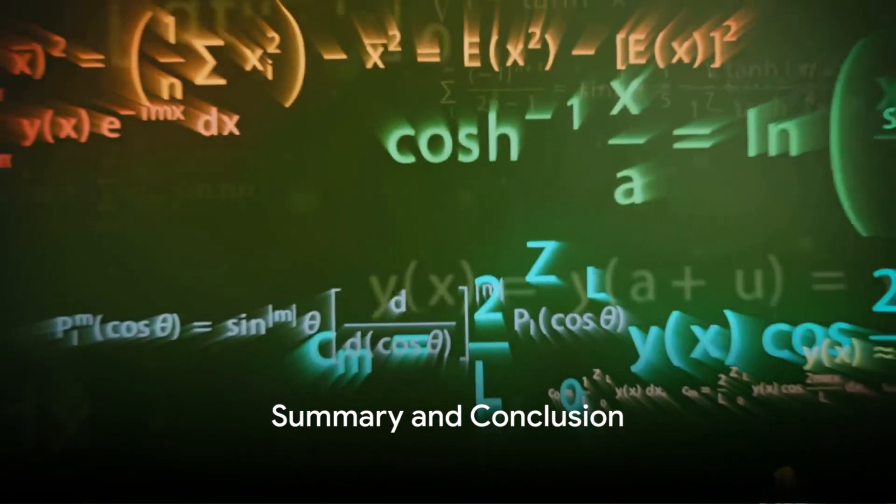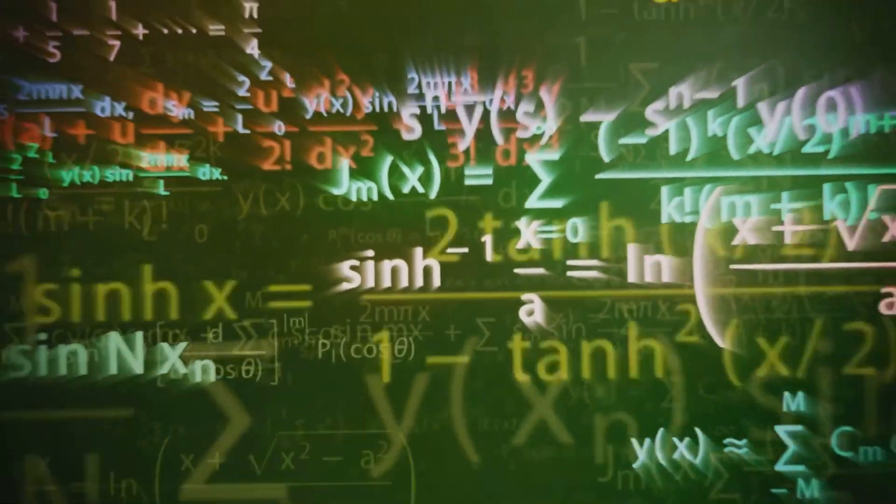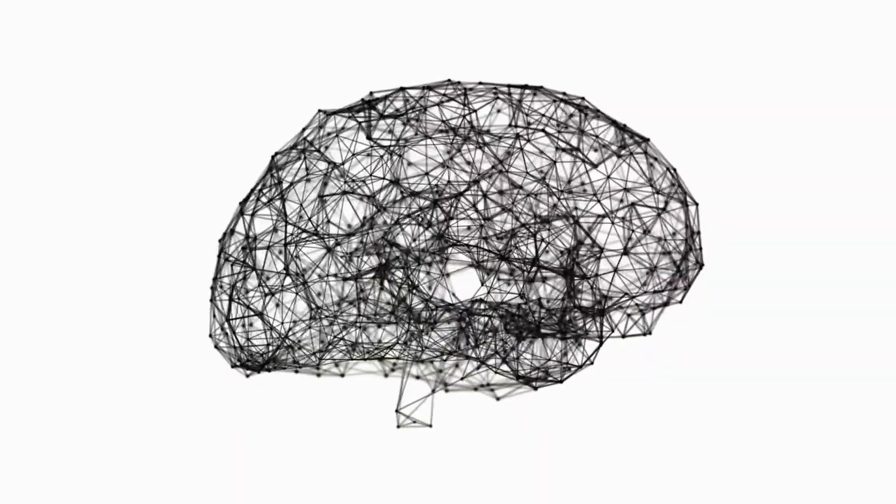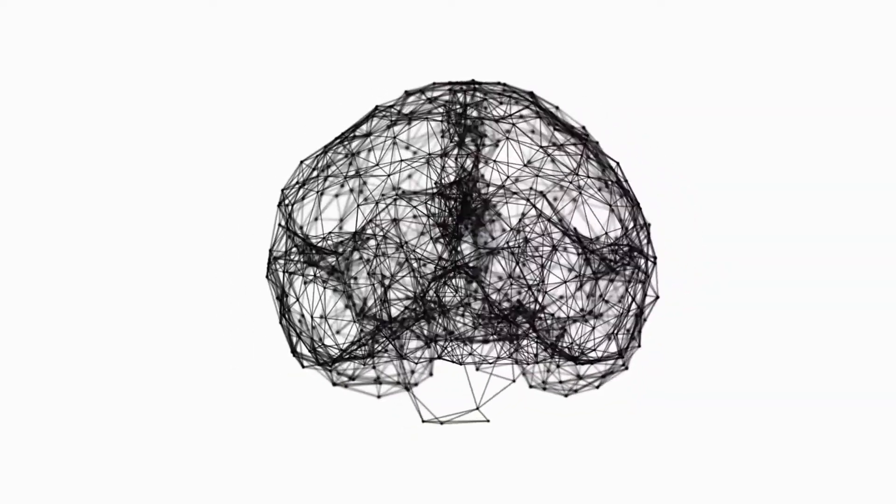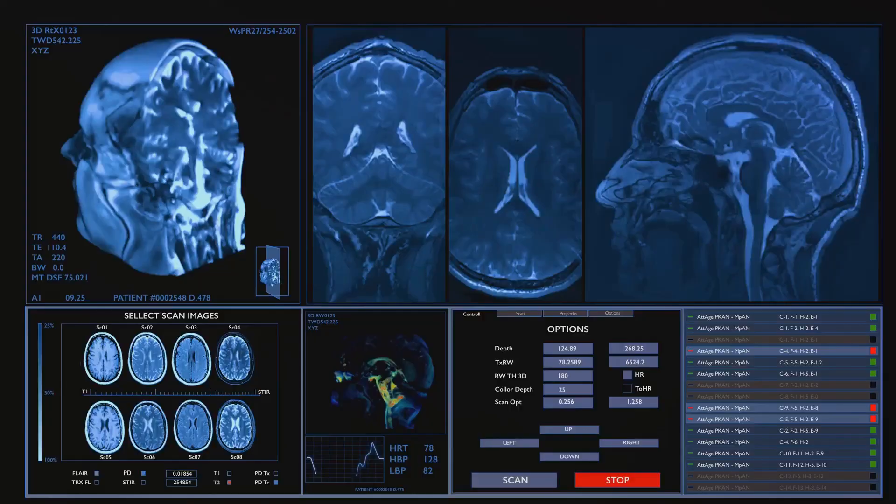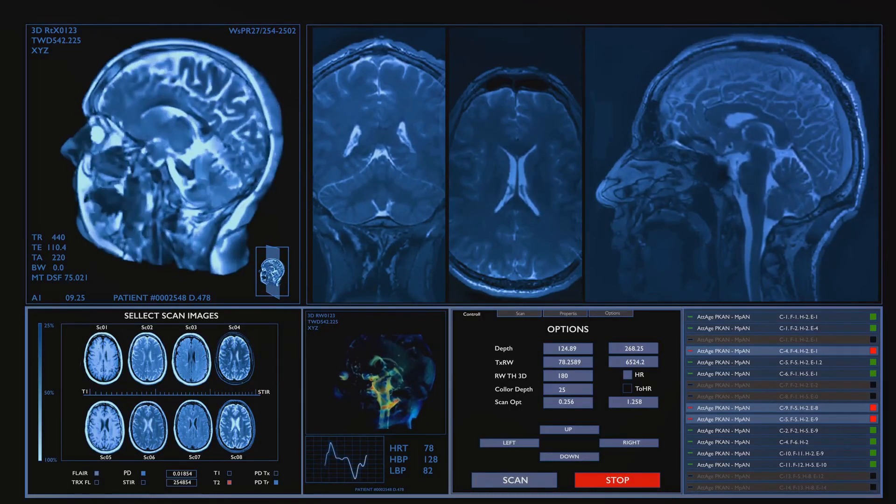To summarize, mathematical breakthroughs have greatly influenced our understanding of the brain. Fractal geometry has revealed the brain's intricate design. Graph theory has modeled its complex network. Differential equations have shed light on brain dynamics, and statistical methods have helped us make sense of the enormous data from brain imaging.